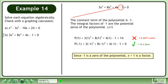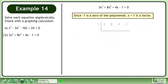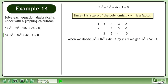Since negative 1 is a zero of the polynomial, x plus 1 is a factor. Set up and complete the synthetic division. When we divide 3x cubed plus 8x squared plus 4x minus 1 by x plus 1, we get 3x squared plus 5x minus 1.